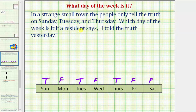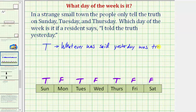Now let's consider what it tells us if the resident states 'I told the truth yesterday' on a day the resident tells the truth. So on a day labeled T, if the resident says 'I told the truth yesterday,' that means whatever was said yesterday was true. But if the resident says 'I told the truth yesterday' on a day where whatever they say is false, that means whatever was said yesterday was false.